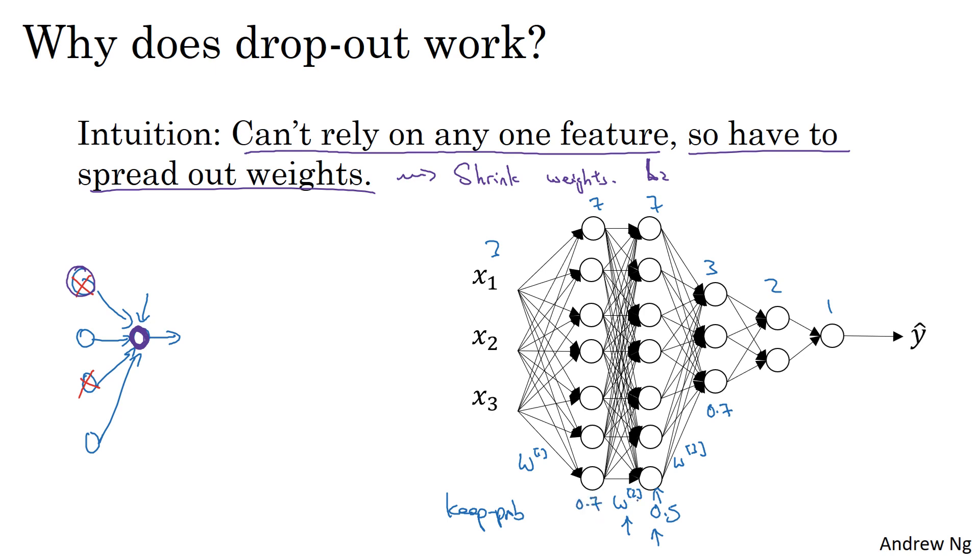And then for layers where you don't worry about overfitting at all, you can have a keep_prop of 1.0, right? So, you know, for clarity, these are numbers I'm drawing in the purple boxes. These could be different keep_props for different layers.